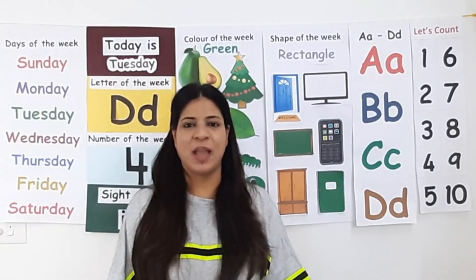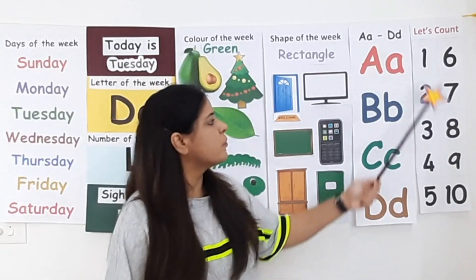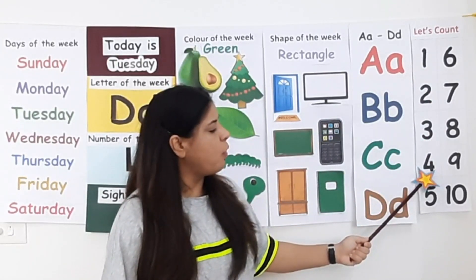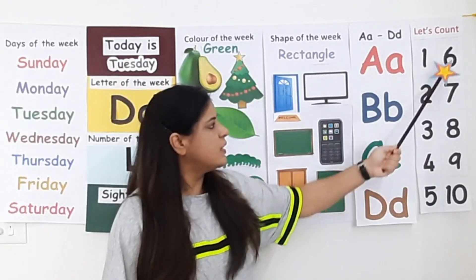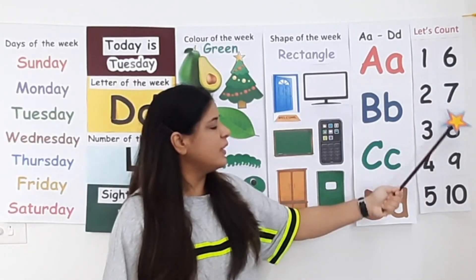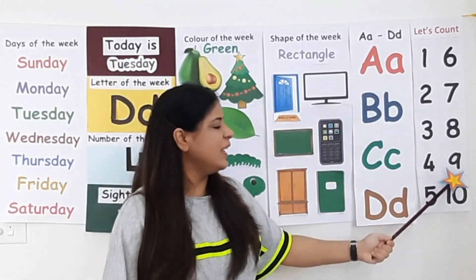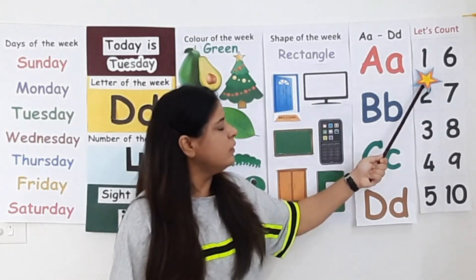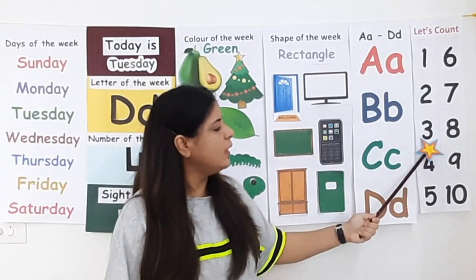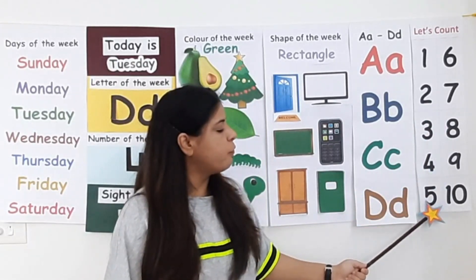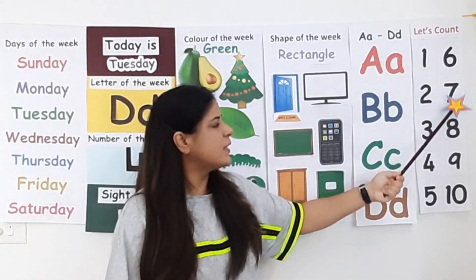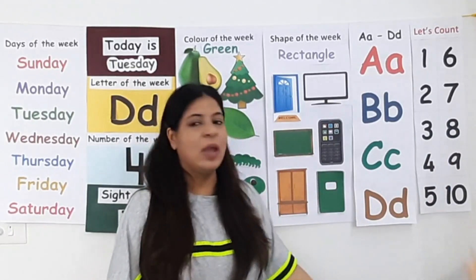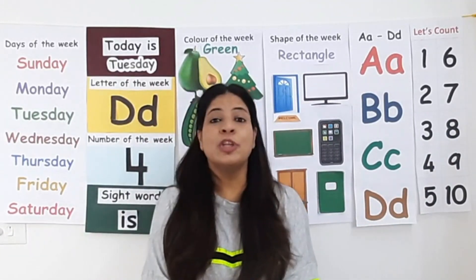Well done! Now it's time to count 1 to 10: 1, 2, 3, 4, 5, 6, 7, 8, 9, 10. Now count along with me: 1, 2, 3, 4, 5, 6, 7, 8, 9, 10. Well done!